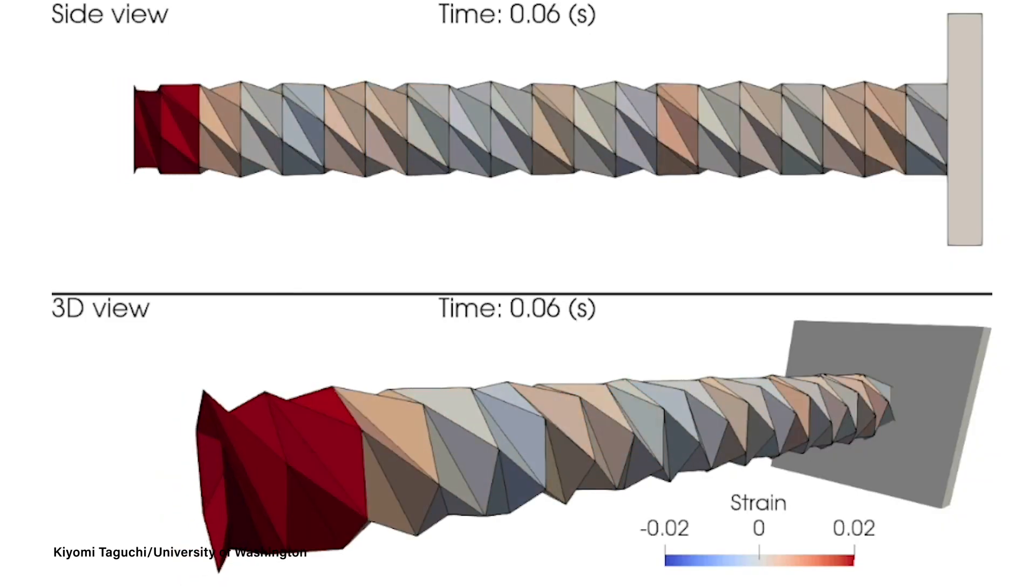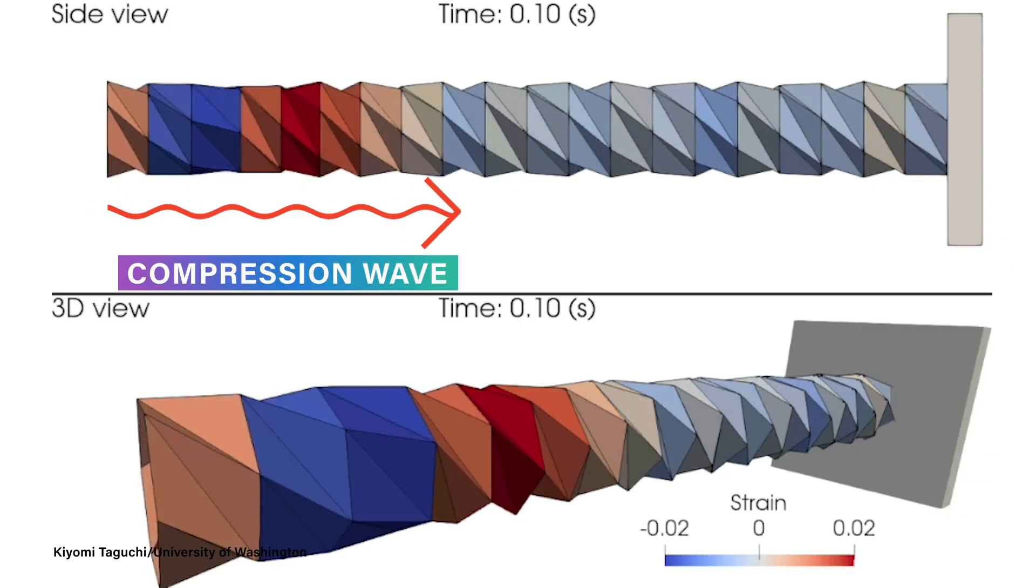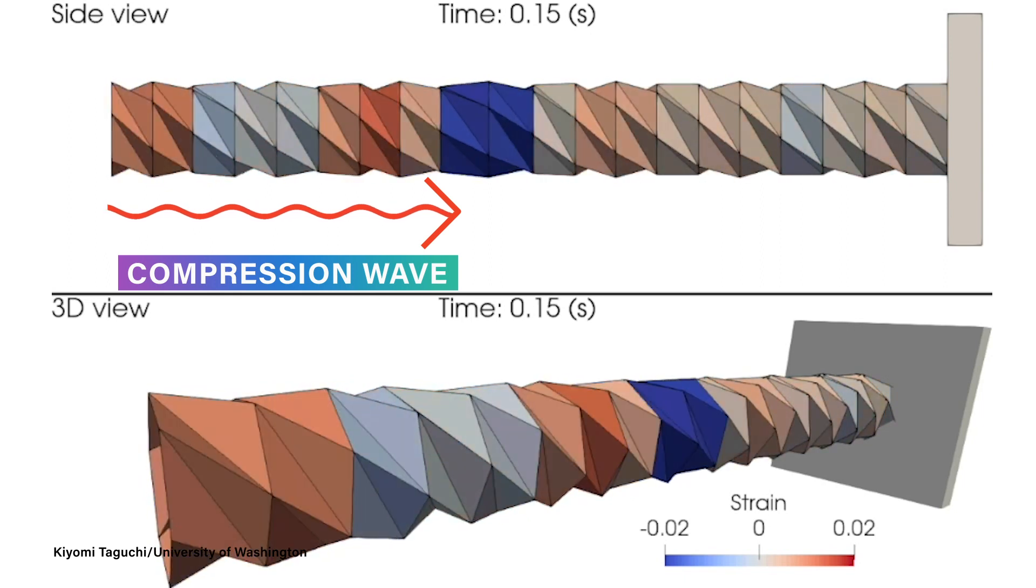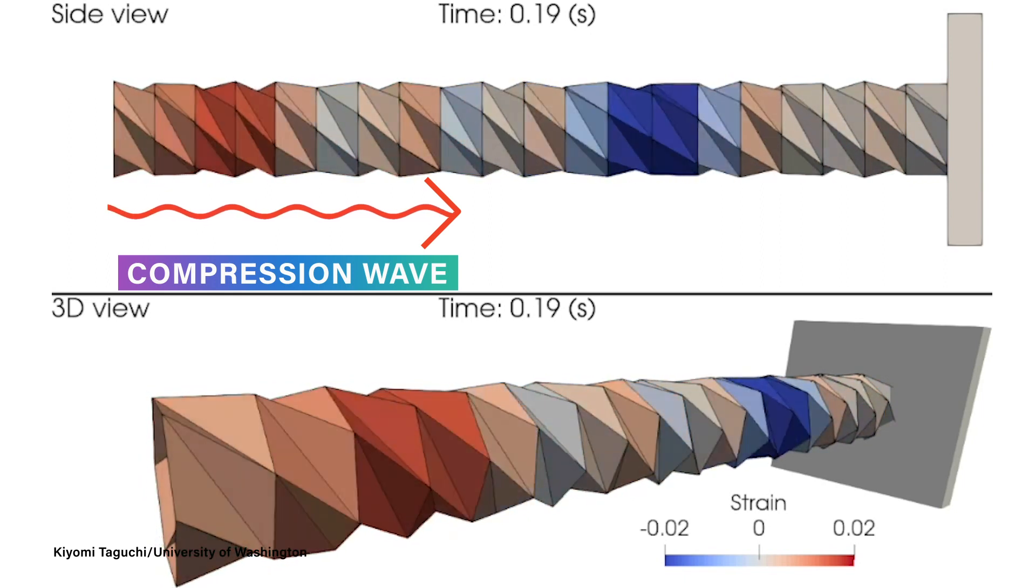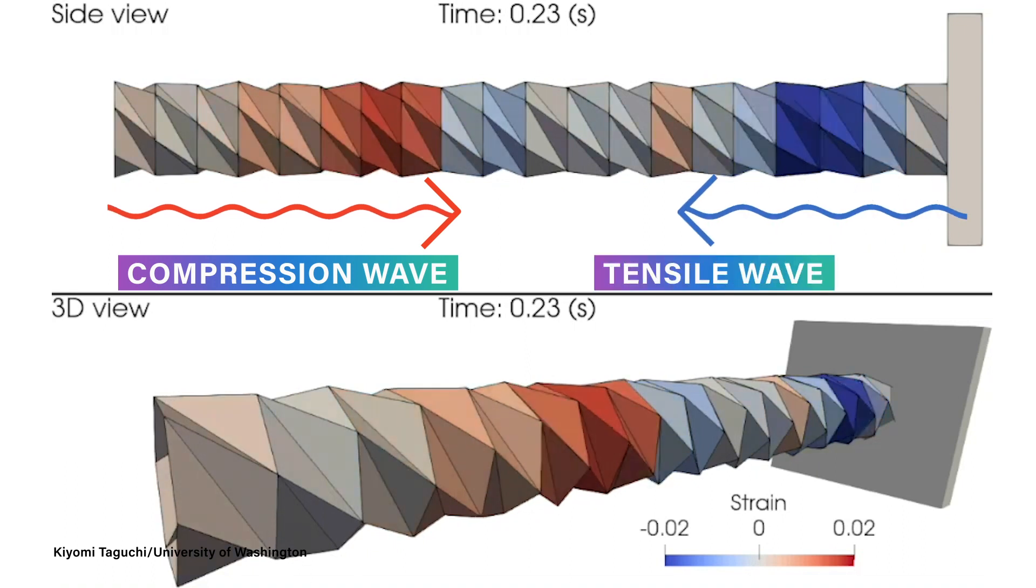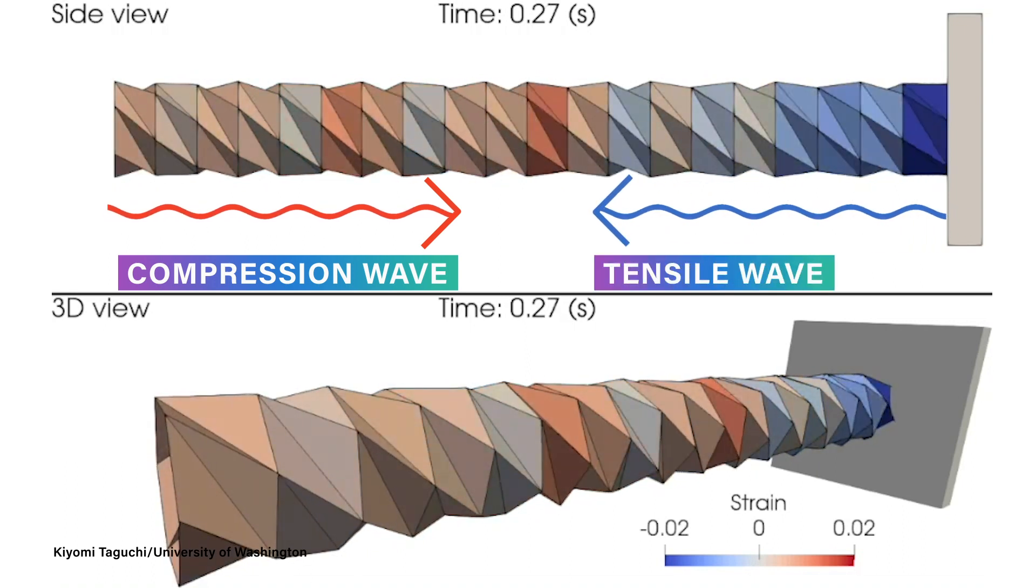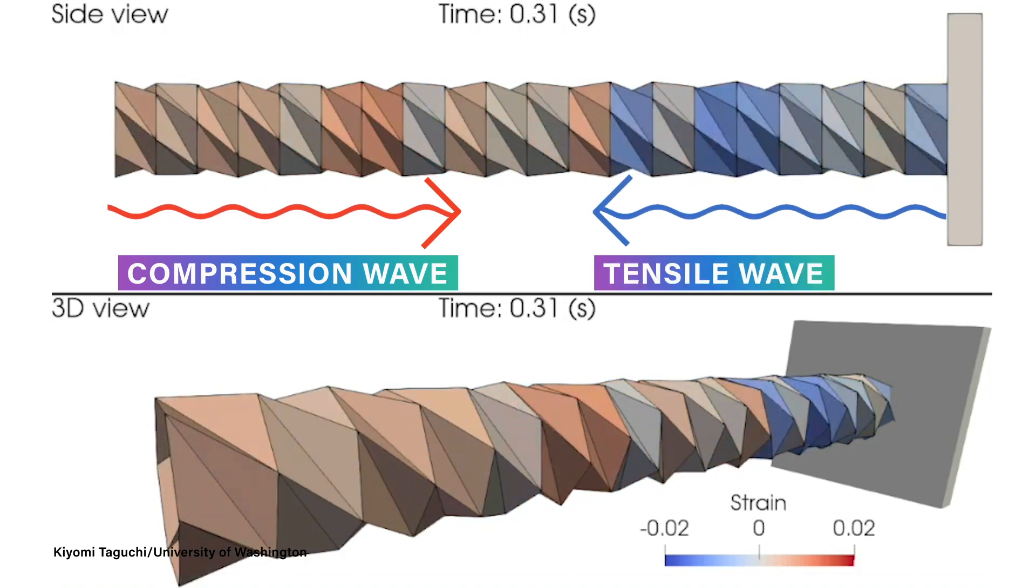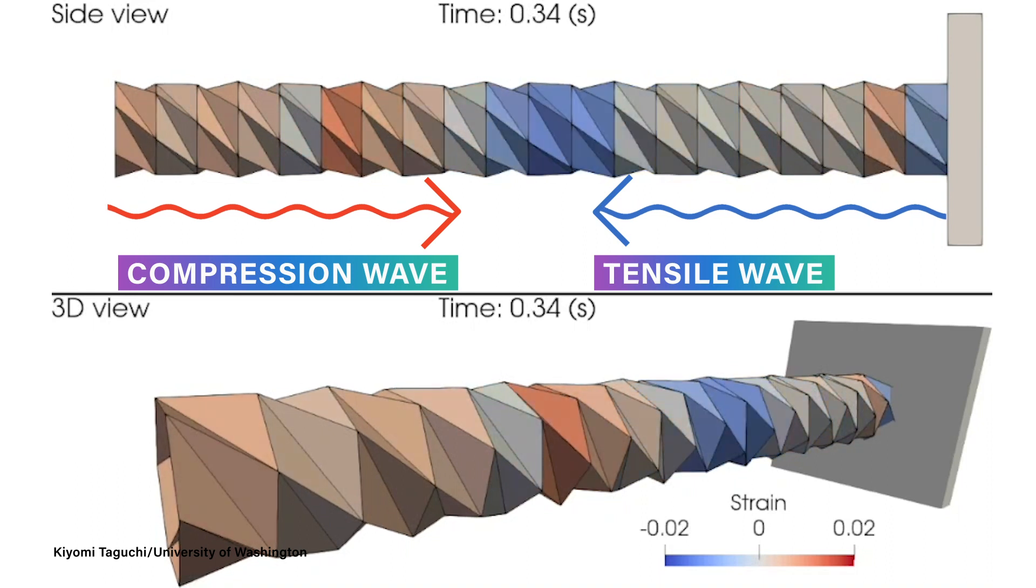What you can see in this 3D model is that as the impact from the compression wave, shown in red, propagates or travels through this structure, it creates an opposite force ahead of it, the tensile wave, shown in blue. This happens so quickly that the tensile wave actually opposes the impact, softening it significantly.